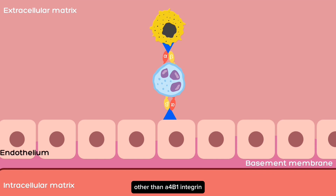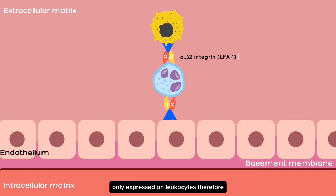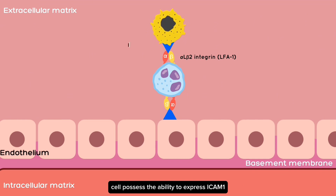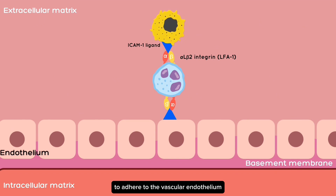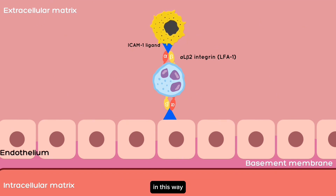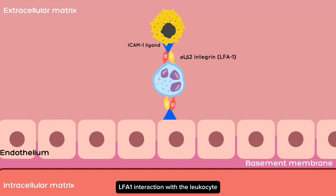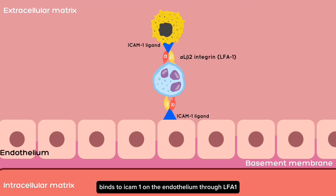Other than A4B1 integrins, alpha-L-beta-2 integrins are only expressed on leukocytes. Therefore, tumor cells utilizing leukocytes as linker cells possess the ability to express ICAM-1, and use leukocytes as linker cells to adhere to the vascular endothelium. This way, they adhere to the endothelium by means of an ICAM-1/LFA-1 interaction with the leukocyte, which in turn binds to ICAM-1 on the endothelium through LFA-1.